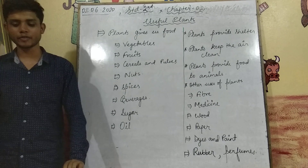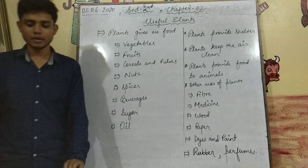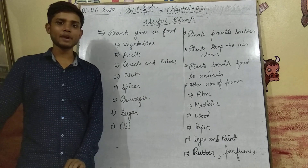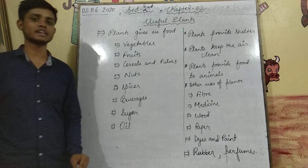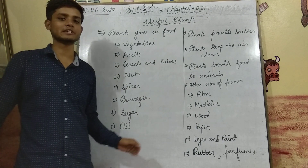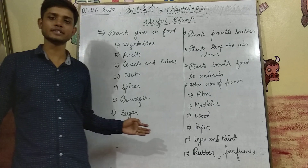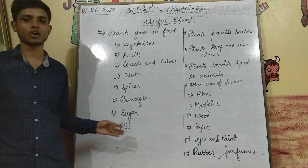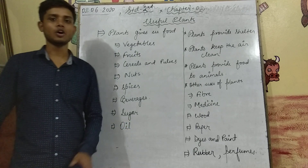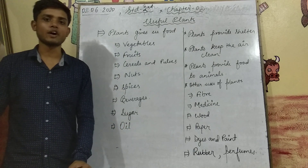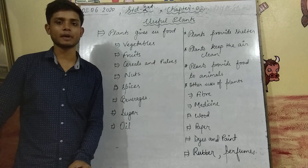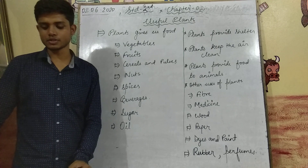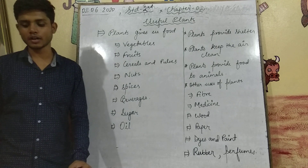Now talking about beverages. Under beverages, plants provide us drinks like tea or coffee. There are also plants which are used to make chocolate.